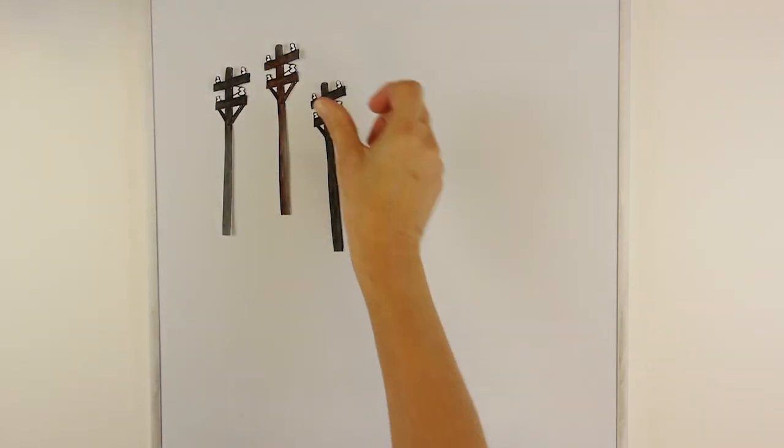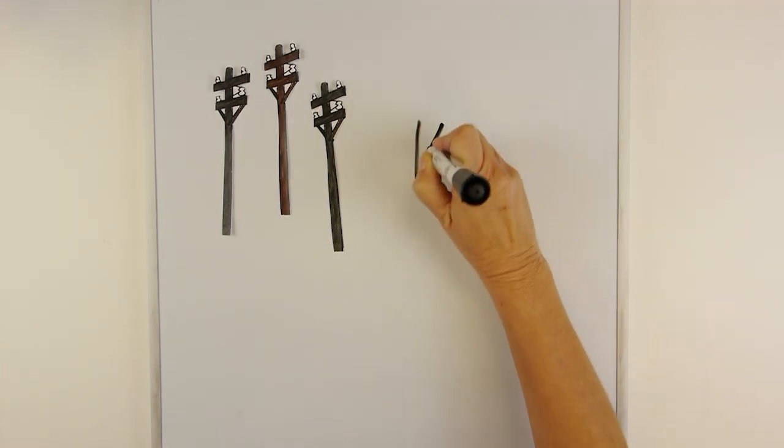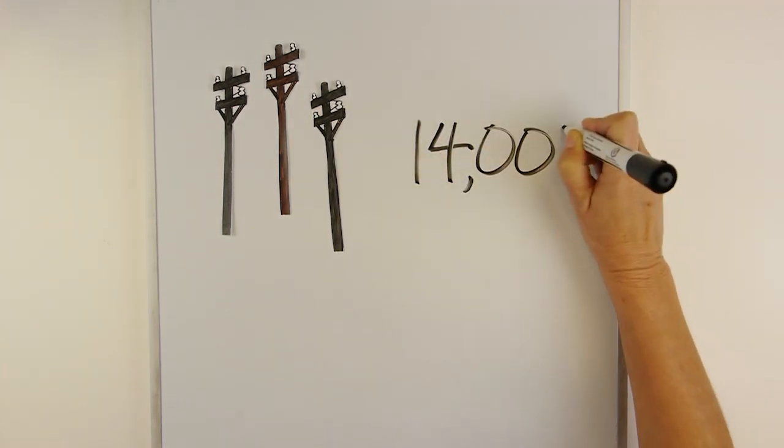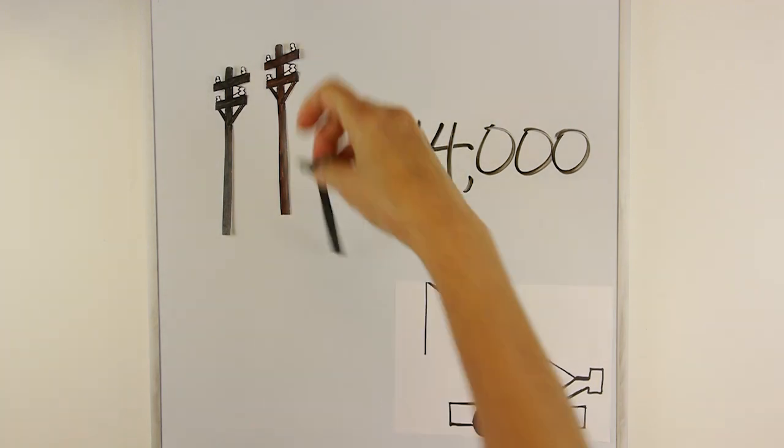In 2013, JEA inspected about 14,000 utility poles to see how strong they were. The weak ones were replaced with new wood or concrete poles.